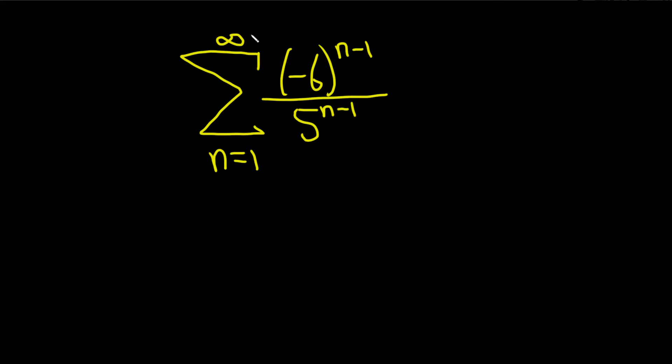So this appears to be geometric. Geometric series have the following form: a times a number r to the nth power, or sometimes you can have it written as a times r to the n minus 1.